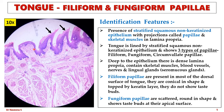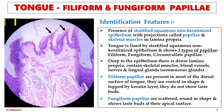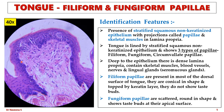Fungiform papillae are round in shape with blunt edges. They show taste buds at their apical surface and are seen scattered on the dorsal surface of the tongue. Each taste bud is composed of long gustatory cells and short supporting cells or basal cells. Gustatory cells are spindle-shaped cells with tapering ends.